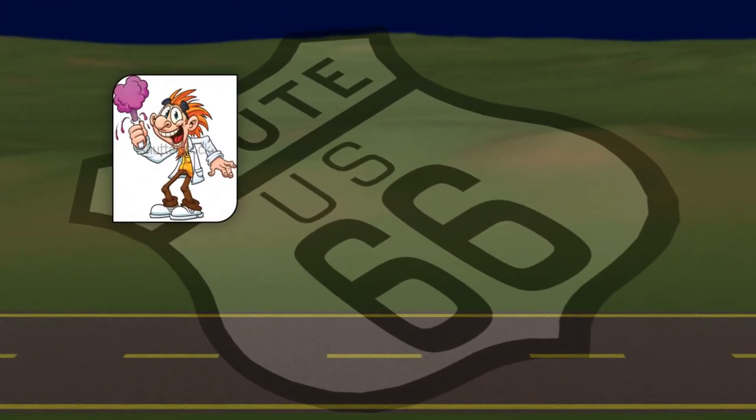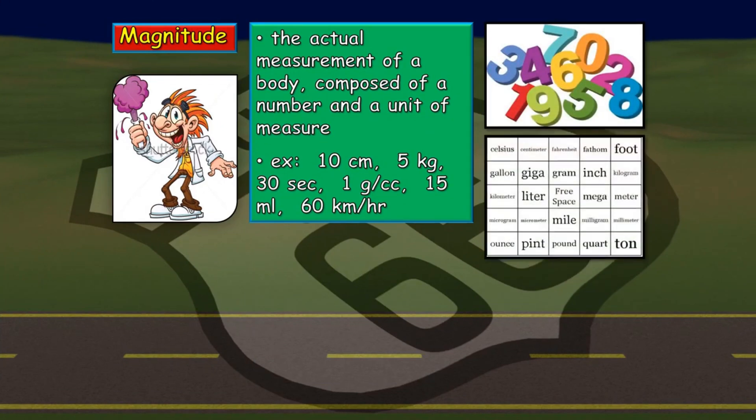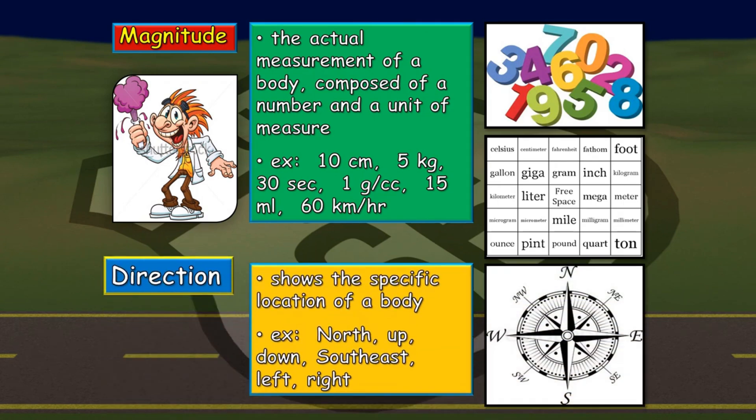Let's try to define what is magnitude. When we are talking about magnitude, this is the actual measurement of a body composed of a number and a unit of measure. Examples are 10 cm for length, 5 kg for mass, 30 seconds for time, 1 g per cc for density, 15 ml for volume, and 60 km per hour for speed. For the direction, commonly, we identify direction using a compass as a device. A direction shows the specific location of a certain body. Examples: north, up, down, south, east, left, and right.